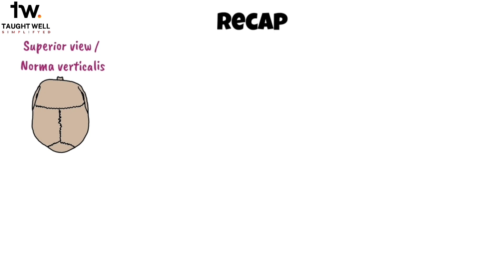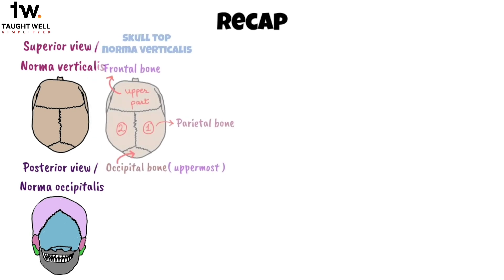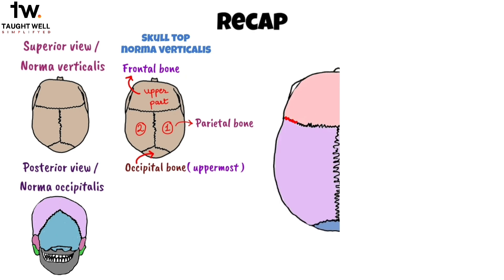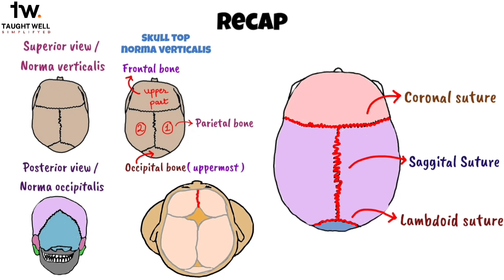This is it for the video, let's recap. The exterior of the skull appears oval when viewed from above, with the back being wider than the front, sometimes appearing more circular. From the top, norma verticalis, we see the upper part of the frontal bone anteriorly, the uppermost part of the occipital bone posteriorly, and a parietal bone on each side. The sutures — joints between skull bones — include the coronal suture running across the cranial vault from side to side, the sagittal suture positioned in the median plane, the lambdoid suture at the back, and the metopic suture occasionally present in 3–8% of individuals, separating the two halves of the frontal bone and fusing by age six.